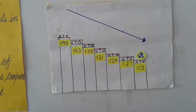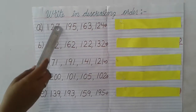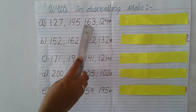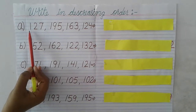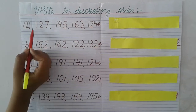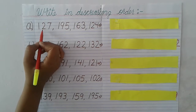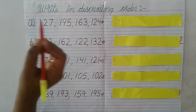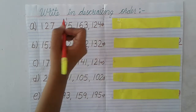Now students, we are going to do one exercise. Write in decreasing order, or descending order: 127, 195, 163, 124. First we look at the hundreds place — all have 1, so they are the same. We go to the tens place: 2, 9, 6, 2. Which is the biggest? 9. So our first answer is 195. Then 6, so 163 is second.